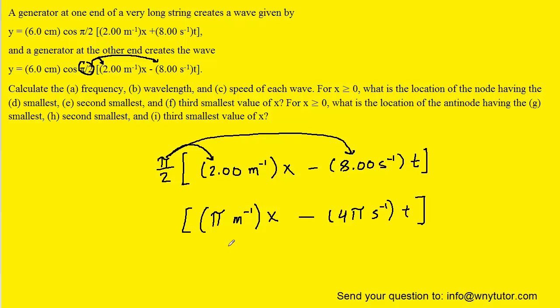And the reason this is helpful is because then we have the equation in a sort of standard form of kx minus ωt. So by lining the equation up, we can see that the value of k is going to be π, and then the value of ω will be equal to 4π.